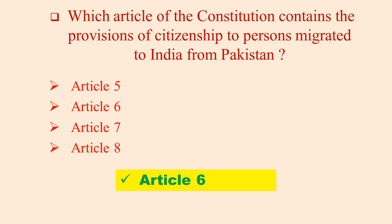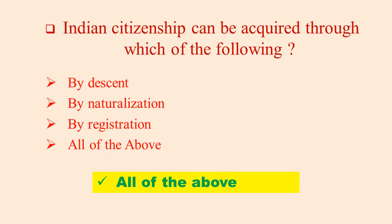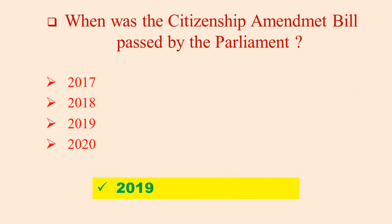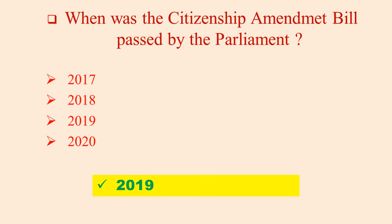Which Article of the Constitution contains provisions of Citizenship for persons migrated to India from Pakistan? Article 6. Indian Citizenship can be acquired through which of the following? By Descent, by Naturalization, by Registration. When was the Citizenship Amendment Bill passed by the Parliament? 2019.